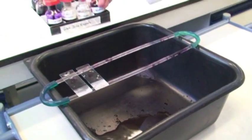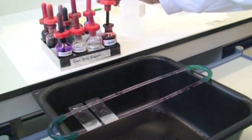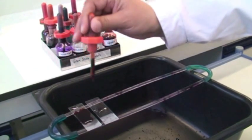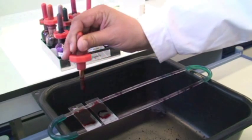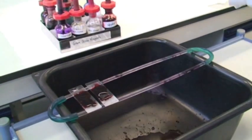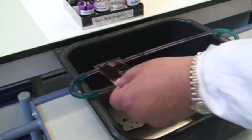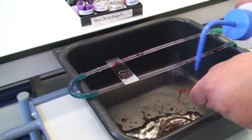And then your final counter stain is the safranin. And you can leave this on for about a minute. Making sure you've covered the area where the bacteria are. And once it's had its minute, then again, washing off your stain.